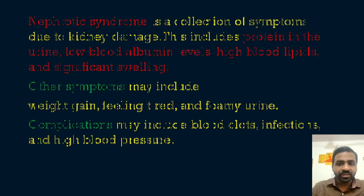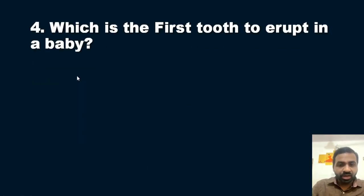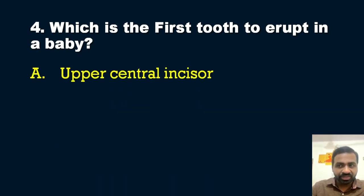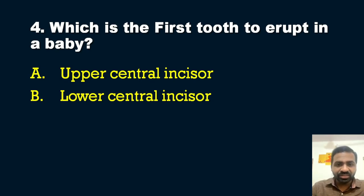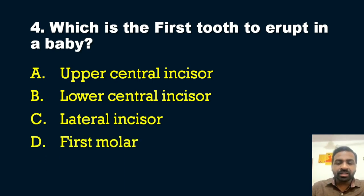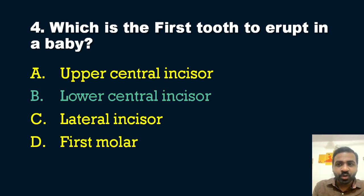The fourth question: which is the first tooth to erupt in a baby? Options: A — upper central incisor, B — lower central incisor, C — lateral incisor, D — first molar. Which is the first tooth to erupt in a baby?